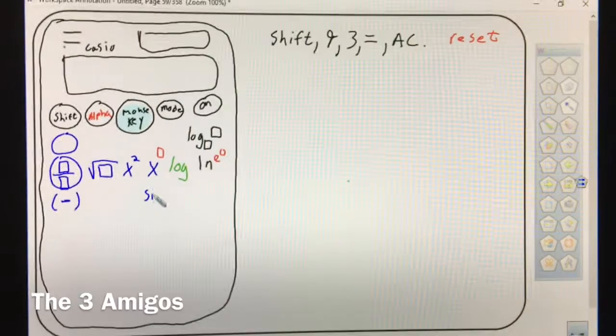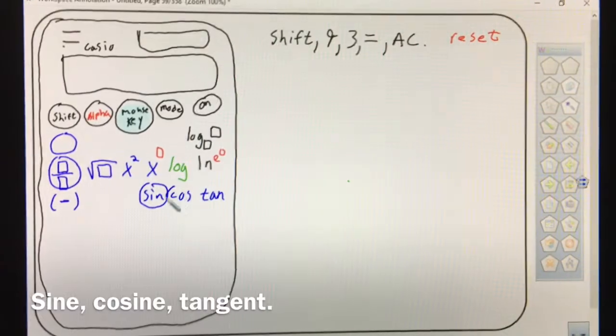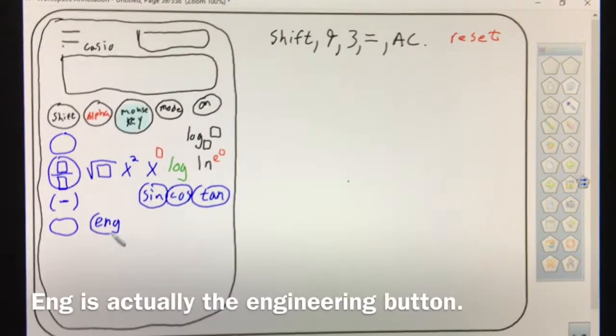Then underneath X box come our three amigos: sine, cosine, tangent. There's a useless button, and then here comes the English button. What do we use the English button for? i. That's going to show up a decent amount.